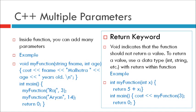Output of this program is Raj Malhotra 3 years old, Aryan 14 years old. There are two parameters used in this function. First is string fname and integer age.